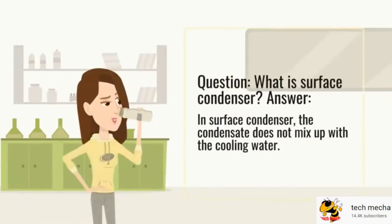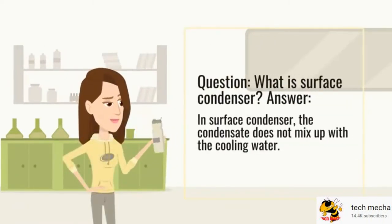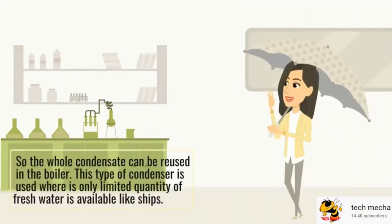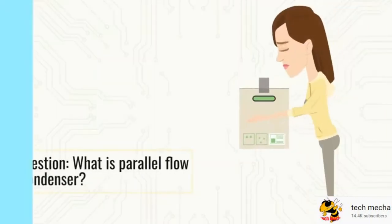What is a surface condenser? In a surface condenser, the condensate does not mix up with the cooling water, so the whole condensate can be reused in the boiler. This type of condenser is used where only a limited quantity of fresh water is available, such as on ships.